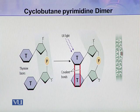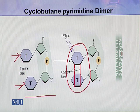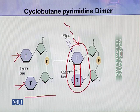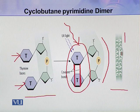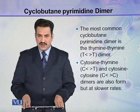Between two adjacent thymines, a dimer is formed. In a normal DNA strand, if UV light falls on two adjacent thymines, they form a dimer. The formation of this dimer produces a small kink in the DNA strand, visible as a small bend. The most common cyclobutane pyrimidine dimer is the thymine-thymine dimer.